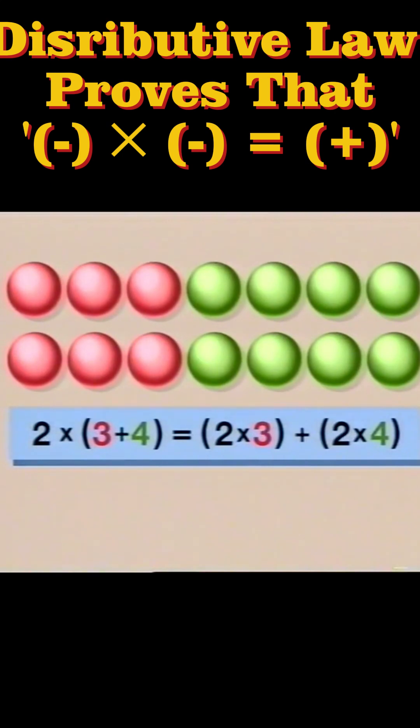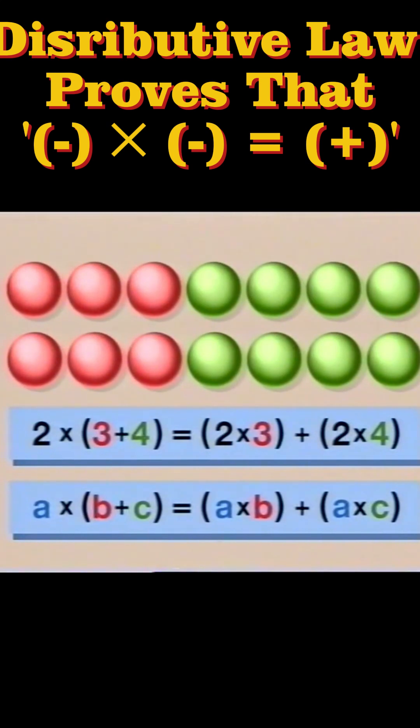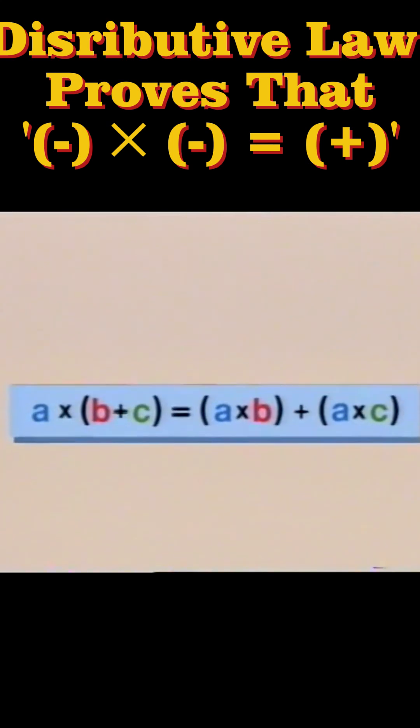And in general, given any positive integers a, b and c, a times b plus c is the same as a times b plus a times c. Suppose we want this to hold for all integers, positive and negative.